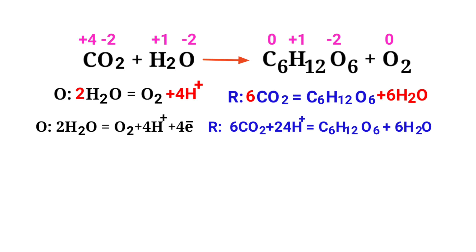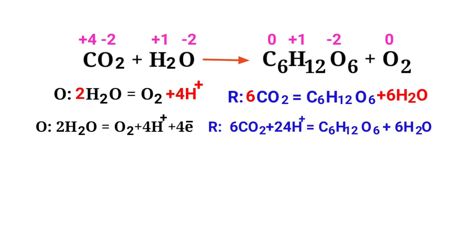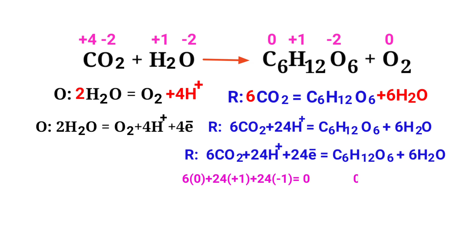Now the charges are equalized in the oxidation half reaction. Next, equalize the charges in the reduction half reaction. Both sides are not equal, so add 24 electrons to the left side to make it equal to 0. The charges are now equalized in the reduction half reaction.